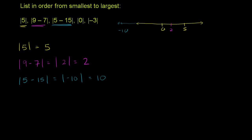Then we have the absolute value of 0. 0 is just 0 away from the number line — the absolute value of 0 is just 0. It has no distance from the origin. And finally, we have the absolute value of negative 3. That's 3 to the left of 0, or you can think of it as just getting rid of the negative sign, so it is equal to 3.